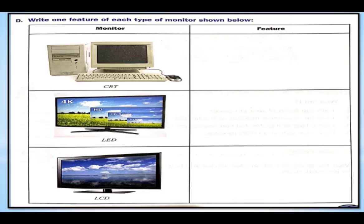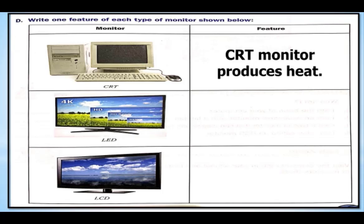Dear students, we have to write one feature of each type of monitor shown below. So, korn-korn se monitor hain? CRT monitor, LED monitor, LCD monitor. And we have to write one feature of every monitor. Let's start. सबसे पहले CRT monitor का एक feature मिखते हैं. CRT monitor produces heat.